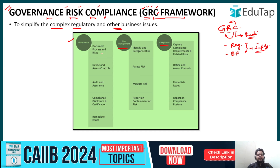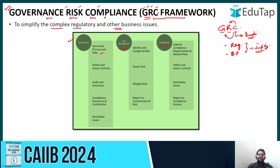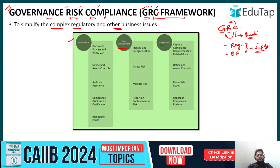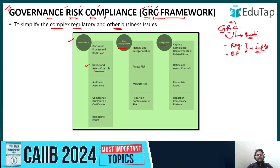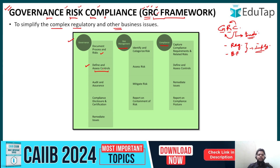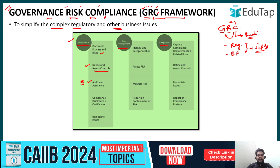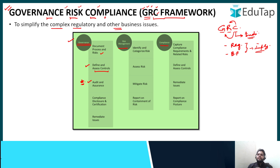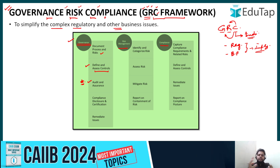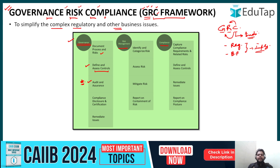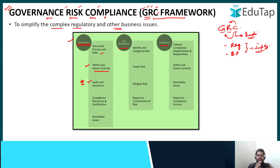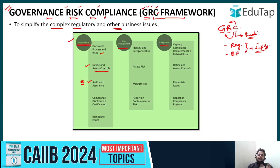Under governance, the documentation process and all the risks will be defined. There will be a well-defined process starting from documentation and going through to compliance for a particular file or case. The defining and assessing of controls — the control mechanism for a particular case — will also be described under the governance head. Audit and assurance is very important here. When we study the GRC framework, there can be confusion, because audit is interchangeably used with compliance — but when you talk about the GRC framework as a whole, audit is a part of governance. Remember this.